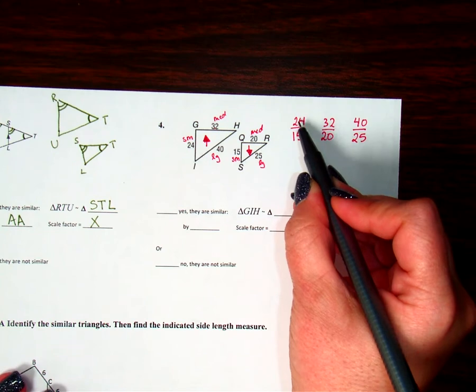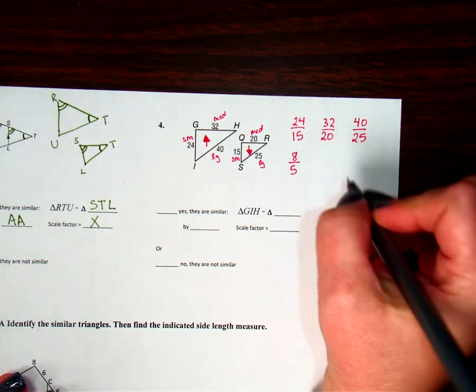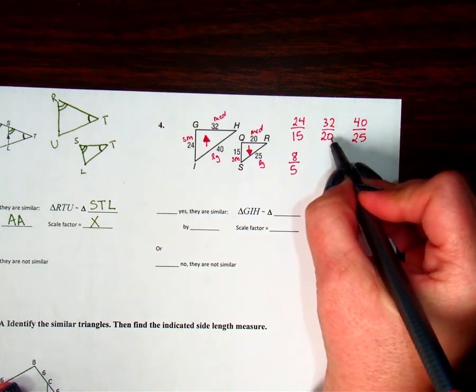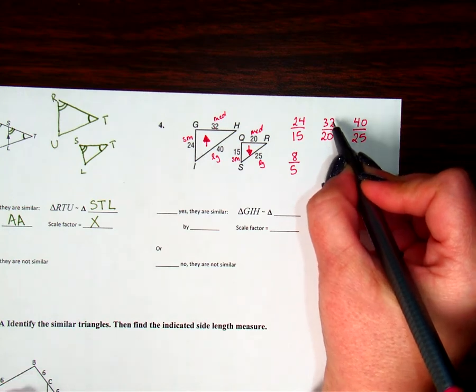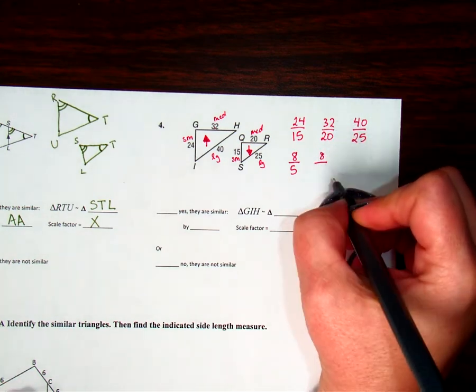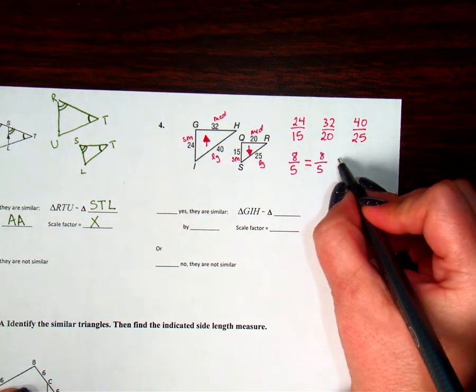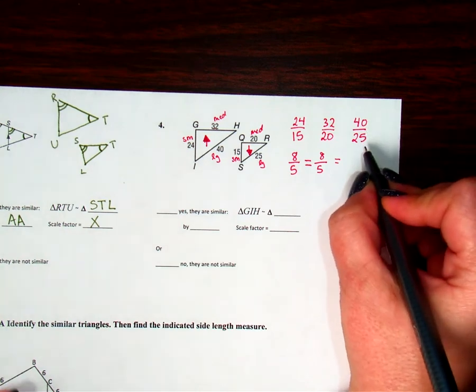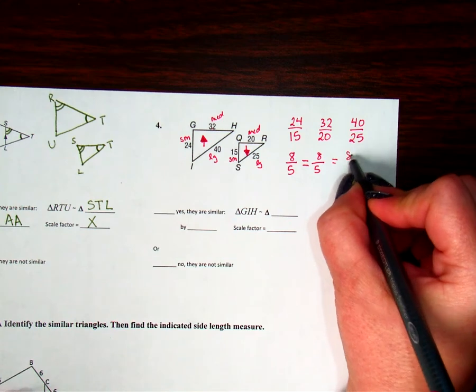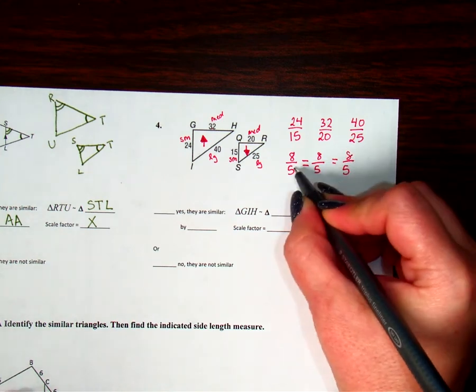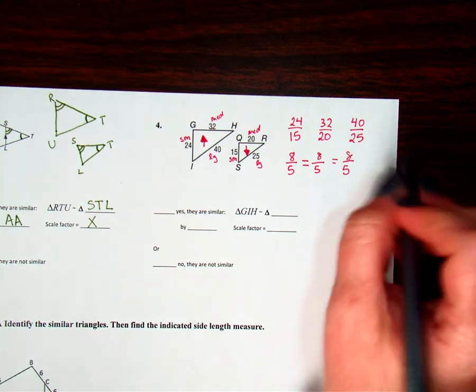So now we're going to reduce and see if they reduce to the same thing. Three goes into 24 eight times. Three goes into 15 five times. 32 and 20 are divisible by four. Four goes into 32 eight times. Four goes into 20 also five times. So these two are equal. Over here, 40 and 25 are both divisible by five. Five goes into 40 eight times, and five goes into 25 five times. So they do all reduce to eight-fifths.